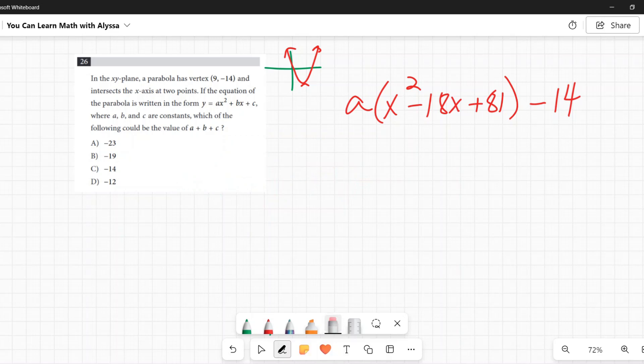And let's, this one's going to take a lot of writing, so I'm trying to give me some room here. Let's distribute that a throughout. So I get ax squared minus 18ax plus 81a minus 14. All right, so a,